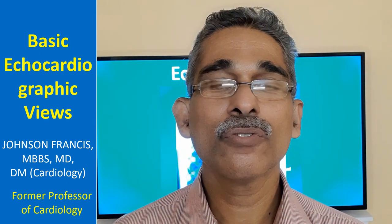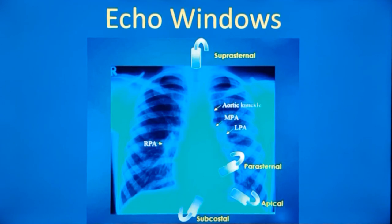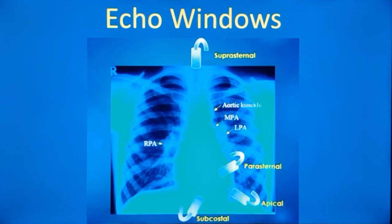Echocardiography is usually done in four echocardiographic windows. Echocardiographic windows are places on the chest where the echo transducer is placed, because those are the regions where the lung is not overlapping the heart. When the lung is overlapping, the echo window will be poor, meaning that the ultrasound beam transmitted from the transducer will not be able to penetrate well and produce good images of the heart.